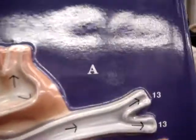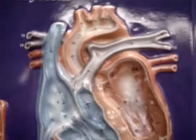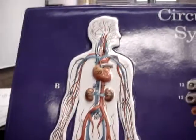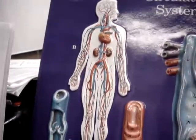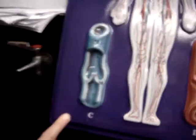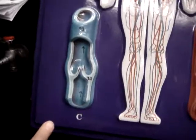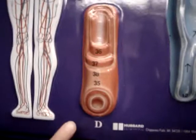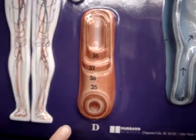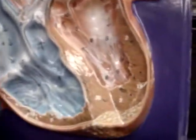A, this whole thing is the heart. B, the human circulatory system. C, a typical vein. And D, a typical artery.